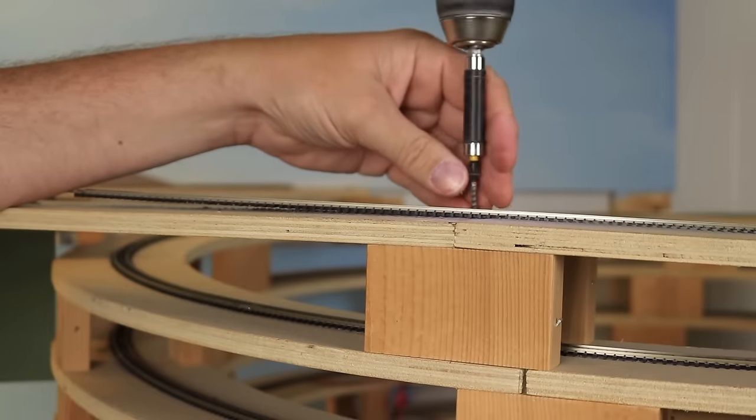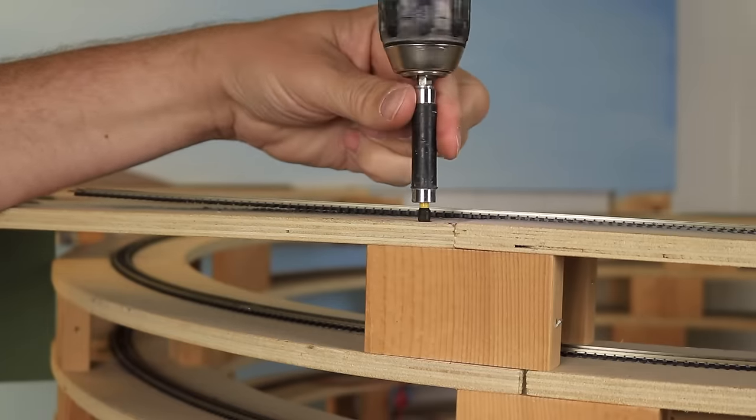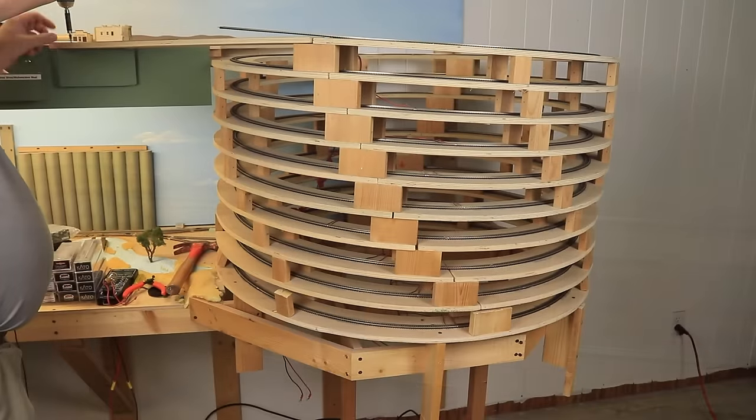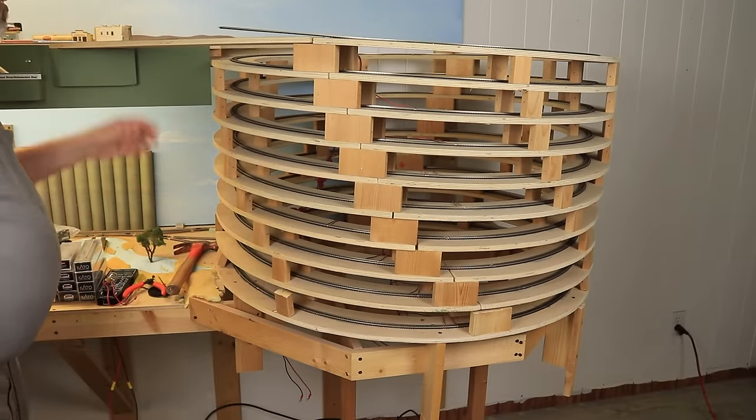The short, straight bridge piece between the Helix and the upper deck is simply screwed down on each end. I removed it, leaving the Helix completely free from the upper deck.